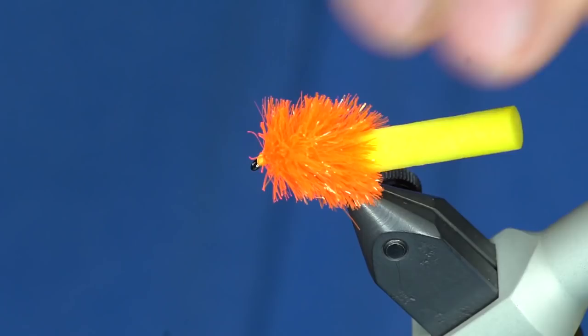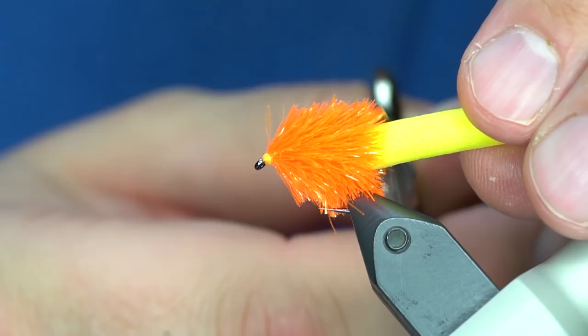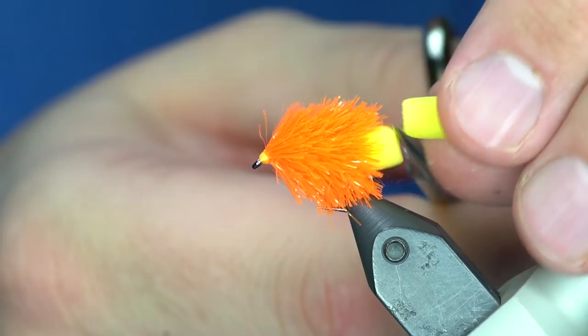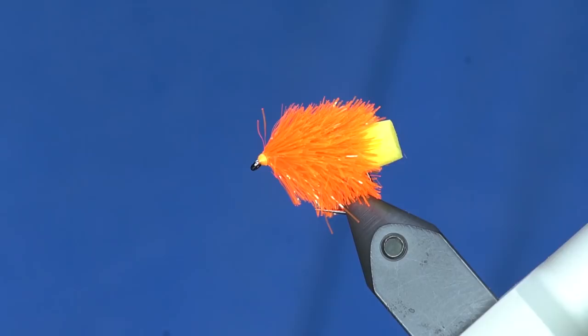And then to trim this off, I want the foam to just extend out a little bit past these fibers. So if you wait till it's tied in, you can always get it to look just right. You're just going to lop that off straight—truly a foam arsed blob. So now I'm just gonna put a little bit of varnish, a wee bit of varnish.